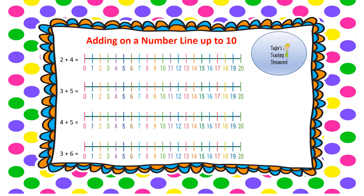We're going to look at how to add on a number line with numbers up to 10. We're going to start with addition questions where the numbers are lower than 10. Our first question is 2 add 4. We're going to start at that first number, 2, and jump on 4 spaces: 1, 2, 3, 4. The number we land on is our answer, so 2 add 4 equals 6.